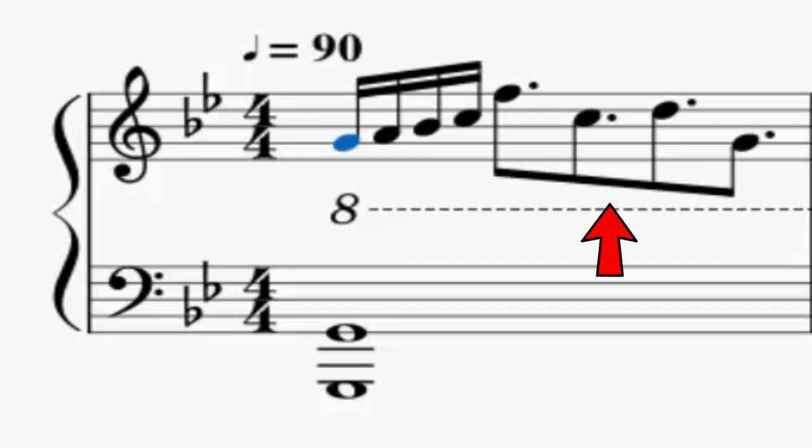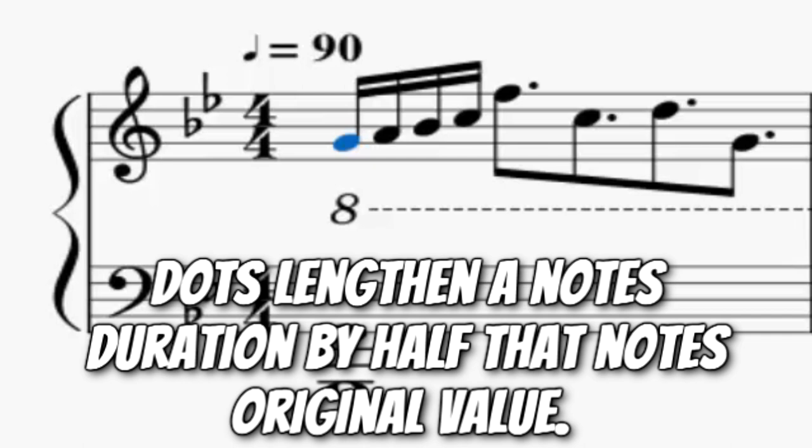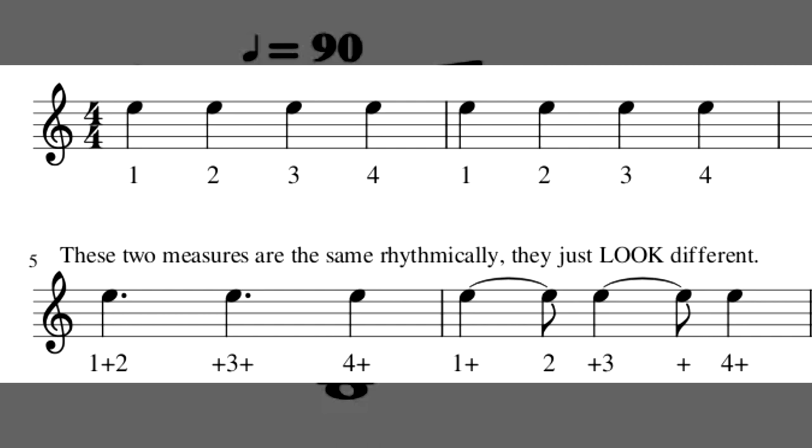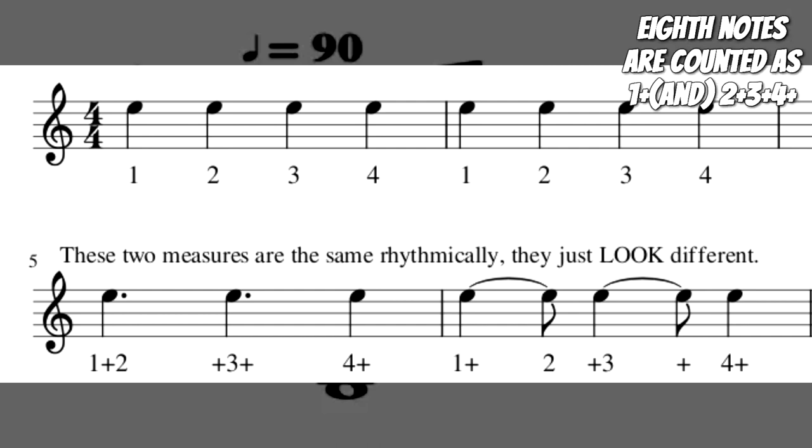However, it's the dotted eighth notes that follow that help throw off the flow of the piece. When we add a dot next to a note, we are extending it by half that note's duration. So for example, in 4-4, a quarter note is considered one beat long. Adding a dot would add half of that duration to the note, making a dotted quarter note a beat and a half long.